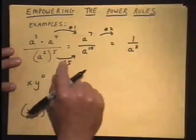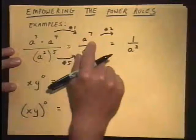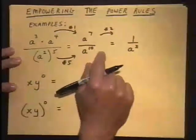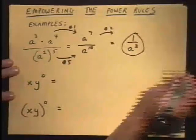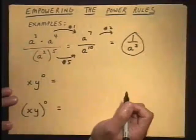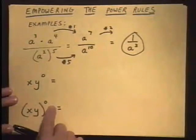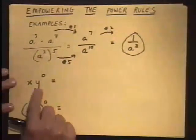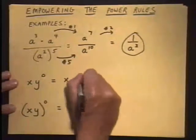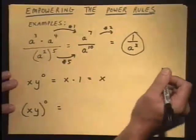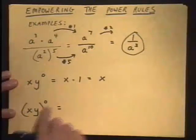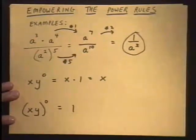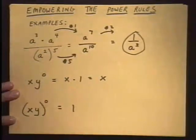Different instructors may use different rules at different times, so don't feel discouraged if you don't start the same way — as long as we end up with the same bottom line. Next example: x times y raised to the zero power versus x·y in parentheses to the zero power. In the first, only y is raised to the zero power, so it's x times one, which gives us x. In the second, everything in the parentheses is raised to the zero power, so all of it becomes one. This illustrates the difference between parentheses and non-parentheses.